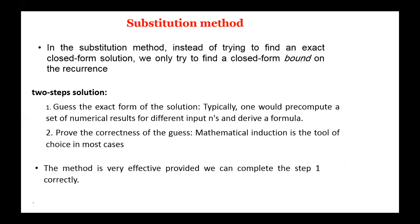We start with the substitution method. In this method, we only try to find a closed-form bound on the recurrence instead of trying to find an exact closed form. There are two steps: first, we guess the solution, and second, we prove the correctness of the guess by induction. This method is very efficient if we find the parameters in step one correctly.